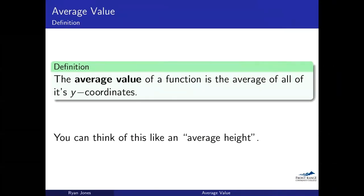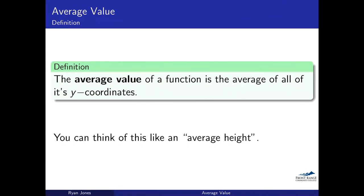If we're dealing with a function, talking about the average value of a function can be a little bit weird because we don't have a distinct number of points. We're not dealing with a finite number of data points — not a situation where you have 30 students who took an exam. If you're dealing with a function, you're actually going to have an infinite number of points. And the more points you put in, the better your average value would be.